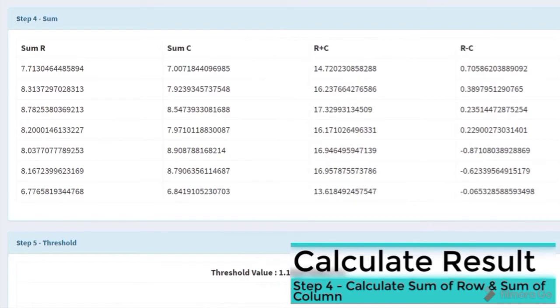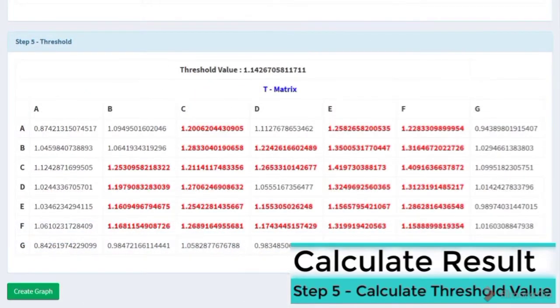In step 4, the sum of row and sum of column will be calculated. In step 5, threshold value will be calculated.